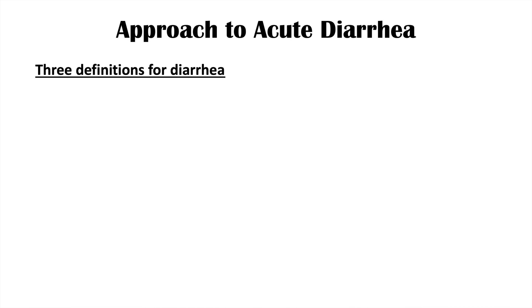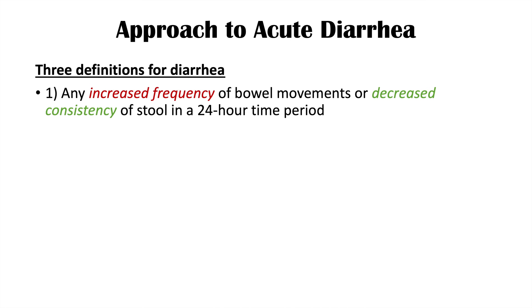So what is diarrhea? There are actually three definitions. The first definition is any increased frequency of bowel movements or decreased consistency of stool in a 24-hour time period. This definition is a bit vague — there are really no numbers to quantify it. It's any increase from the baseline of a person, or a decreased consistency, perhaps a bit watery or softer than usual, occurring in a 24-hour time period.